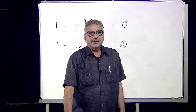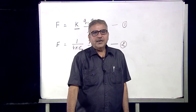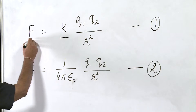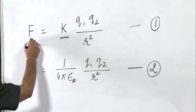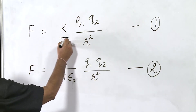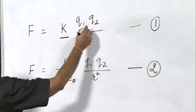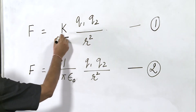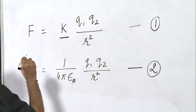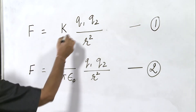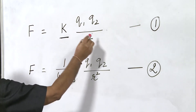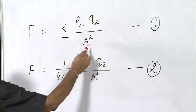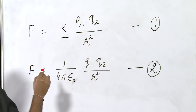Let us write Coulomb's law in the mathematical form. F, the force between two charges, is equal to k·q1·q2 upon r square. Here, k is the constant of proportionality, q1 and q2 are the two charges, and r is the separation between these two charges.